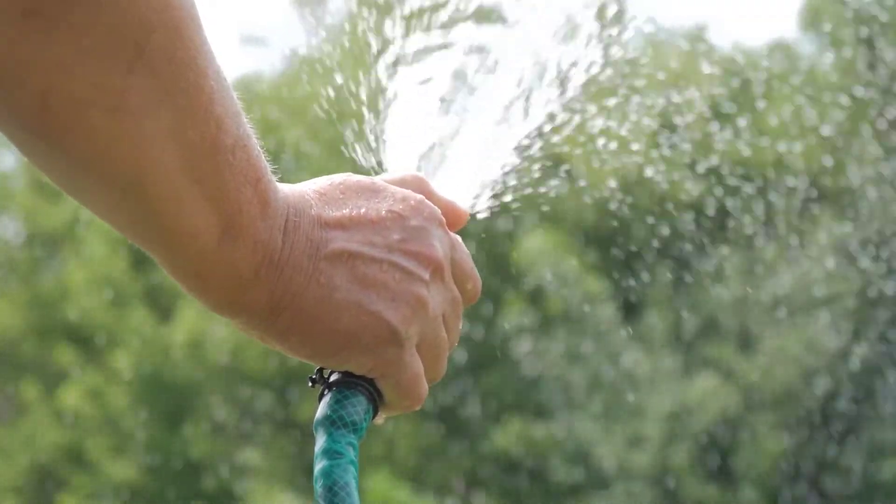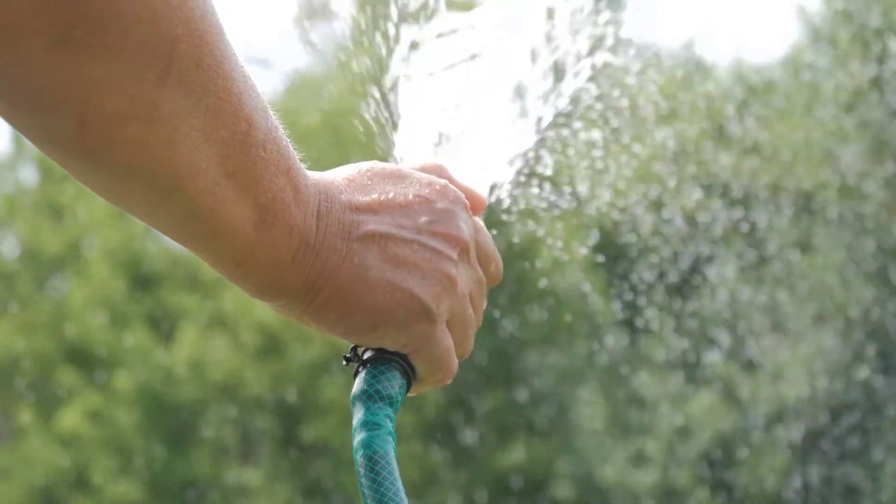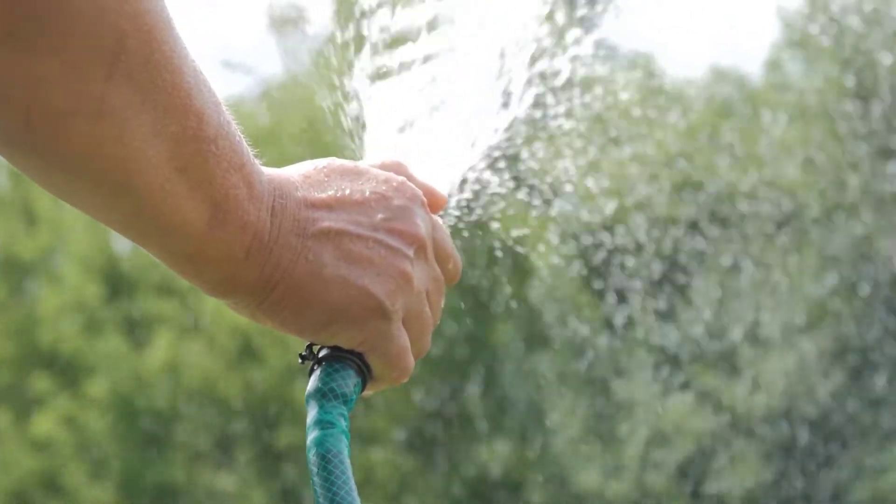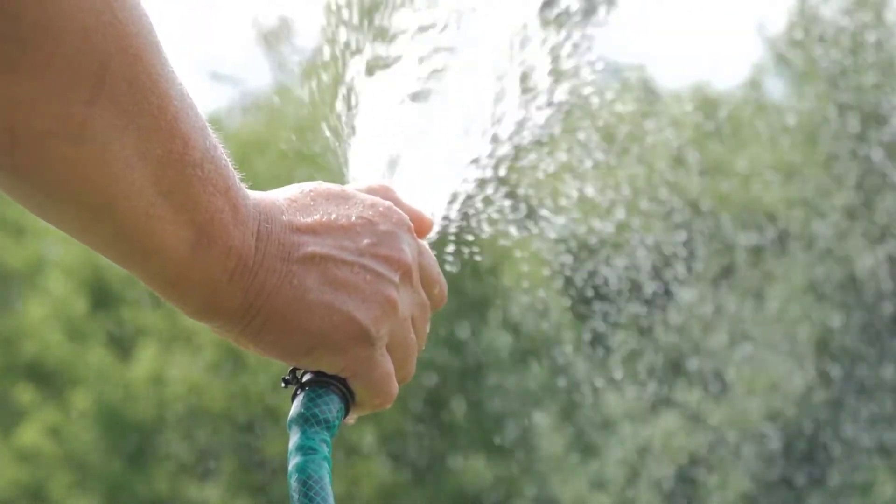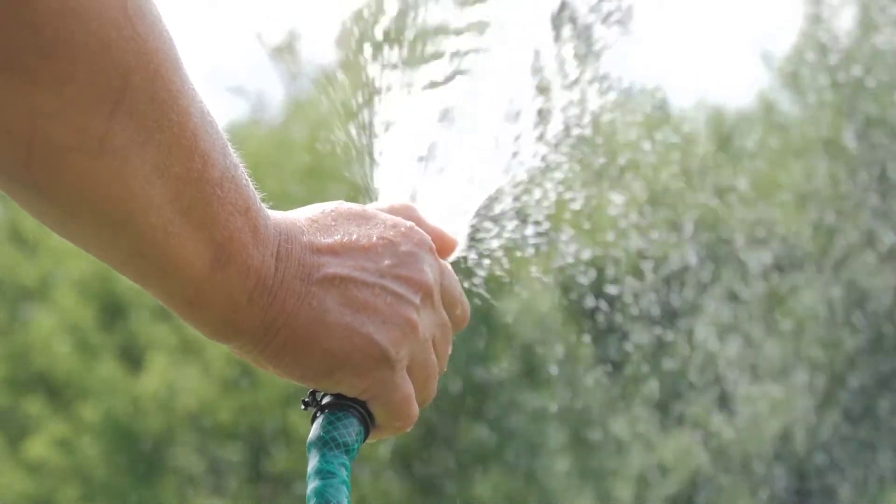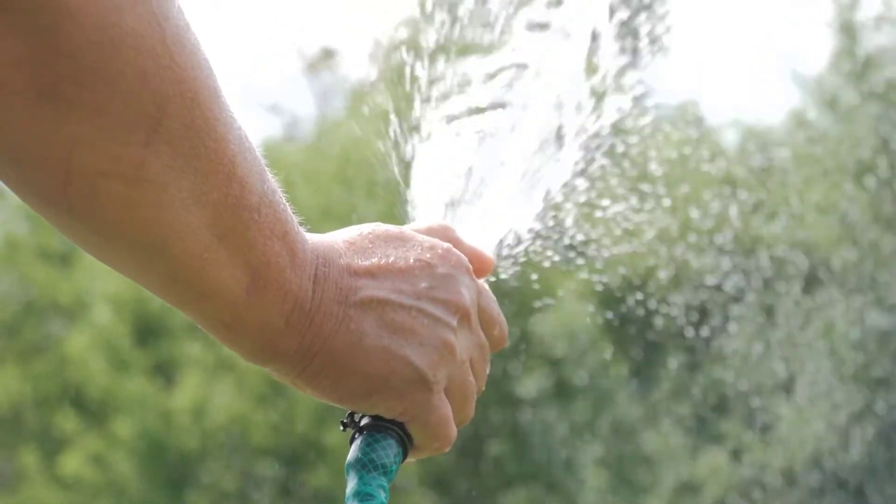A direct application of the mass conservation can be found in a common garden water hose. The mass of water entering the hose is equal to the mass of water exiting on the other end.